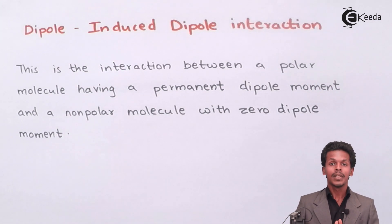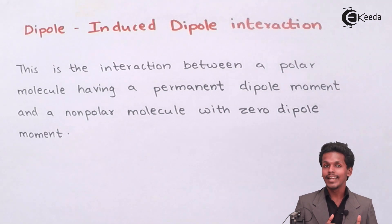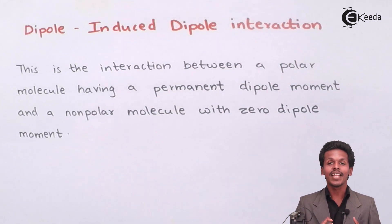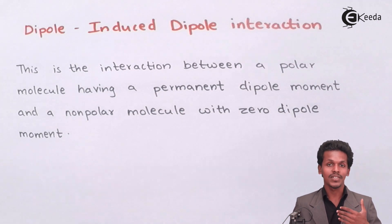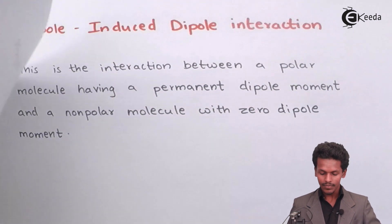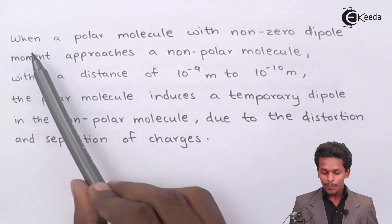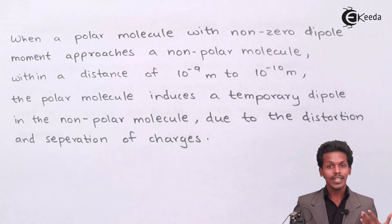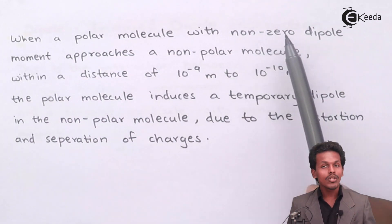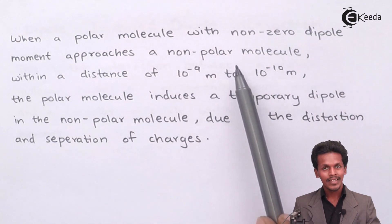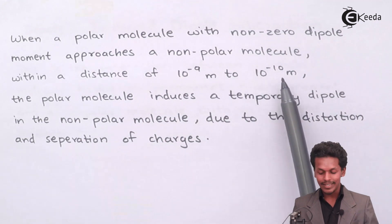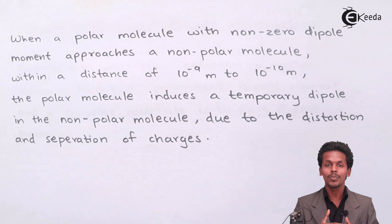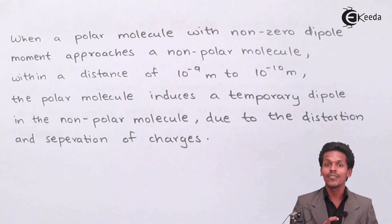We are now talking about a molecule which has a permanent dipole moment interacting with another molecule which has a dipole moment of zero. When a polar molecule with non-zero dipole moment approaches a non-polar molecule within a distance of 10⁻⁹ to 10⁻¹⁰ meters, this kind of interaction takes place.